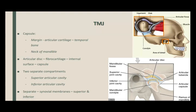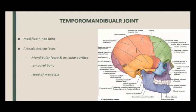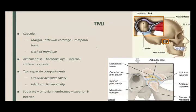Before going further, let me go back for a minute. This is the articular tubercle — the mandibular fossa — and anterior to the mandibular fossa is the articular tubercle. TMJ stands for temporomandibular joint; this is an internationally recognized abbreviation. Wherever you read about the mandibular joint, it will always be referred to as TMJ.